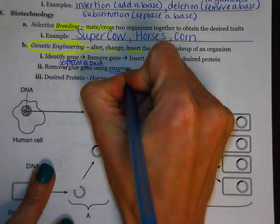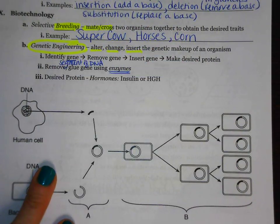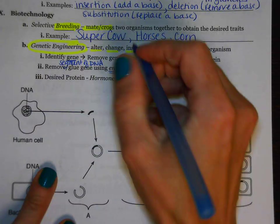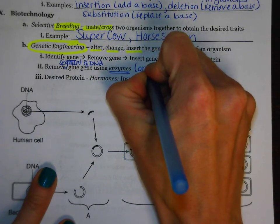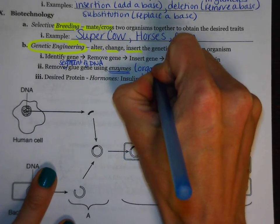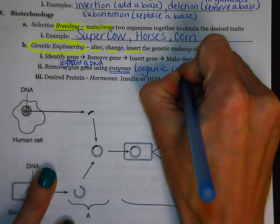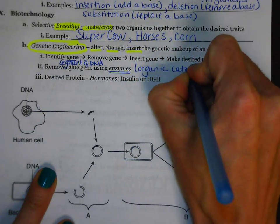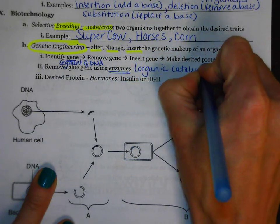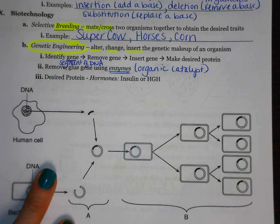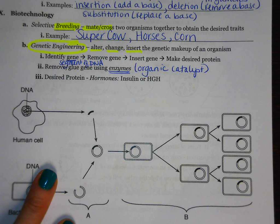A lot of times we use the analogy that enzymes are scissors. Another name for an enzyme is an organic catalyst. You're going to use a specific enzyme because you want to make sure that you don't cut any section of the gene that you want.